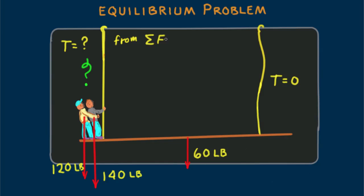So from sum of the forces equal zero, T minus 120 pounds, minus 140 pounds, minus 60 pounds, and no tension on the right hand rope, all equals zero.